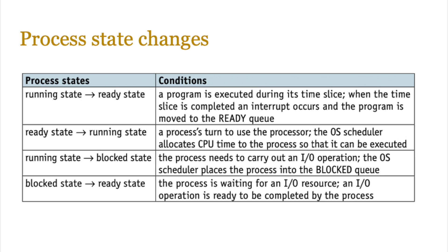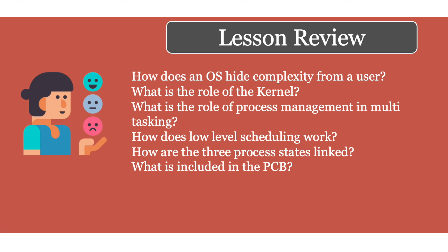Moving from blocked to ready happens when the I/O resource or event the process was waiting for is completed — it's then moved to the ready state because it's now ready to run. To wrap up this lesson: you should now have a better understanding of how an operating system hides complexity from users, the role of the kernel, how process management enables multitasking, how low-level scheduling works, how the three process states are linked, and what the PCB contains. In the next lesson we'll move on to discussing the various scheduling algorithms.